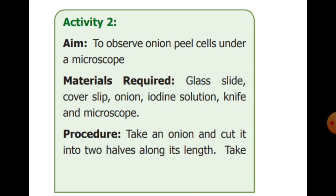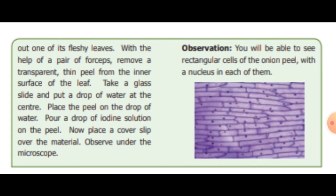Activity: To observe onion peel cells. Take an onion and with the help of a pair of forceps, remove a transparent thin peel from the inner surface of the leaf. Take a glass slide and put a drop of water on the center. Place the peel on the drop of water, pour a drop of iodine solution over the peel, and then place the cover slip over the material and observe under the microscope. You will be able to see rectangular cells of the onion peel with the nucleus in each of them.